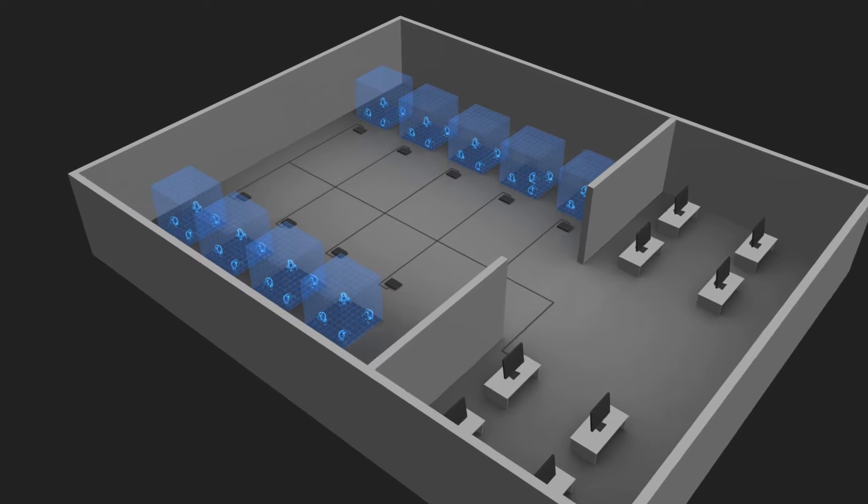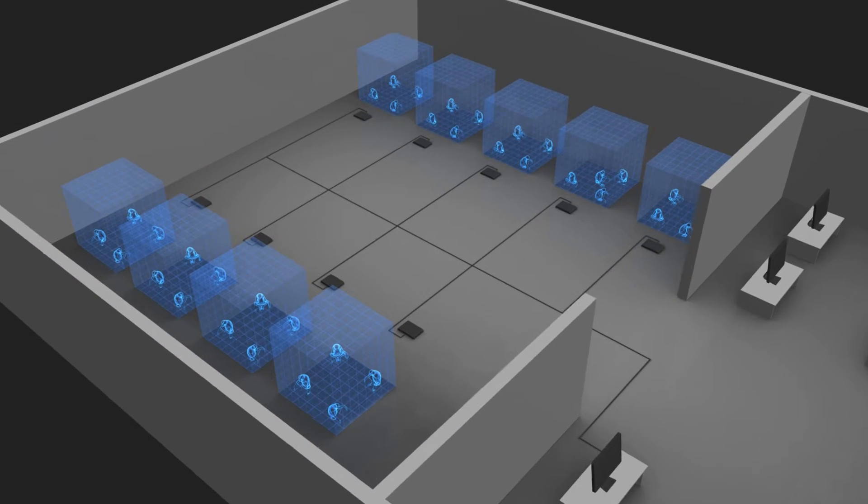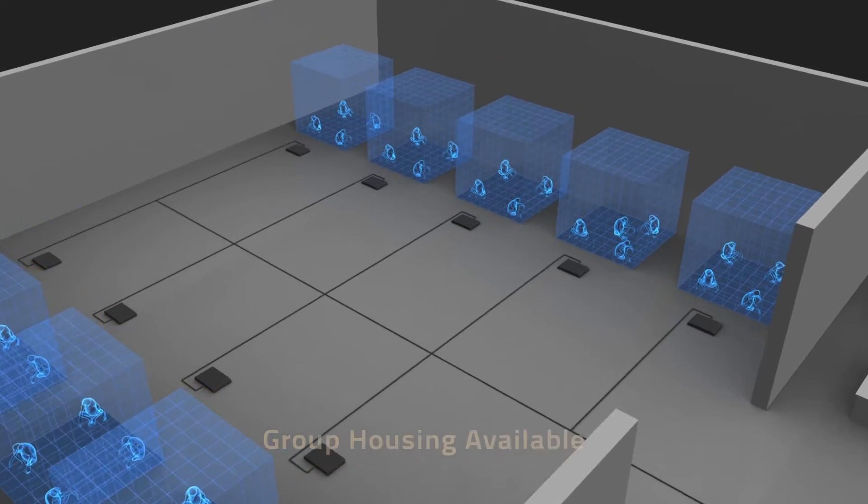DSI's JET accommodates data collection from single to group house settings for up to 36 animals in the same room.